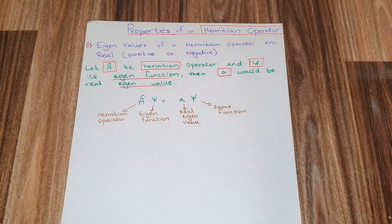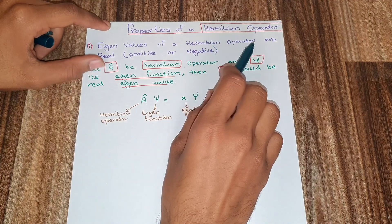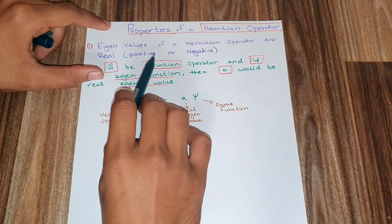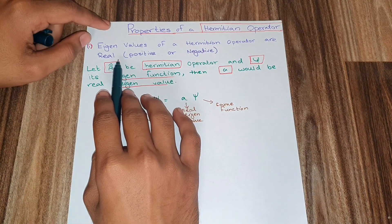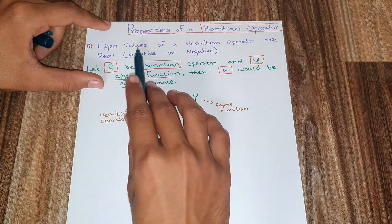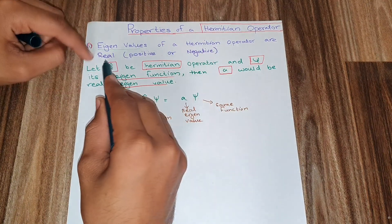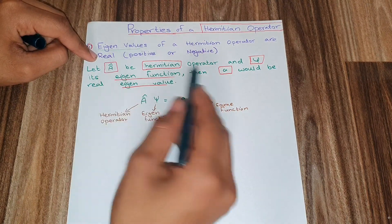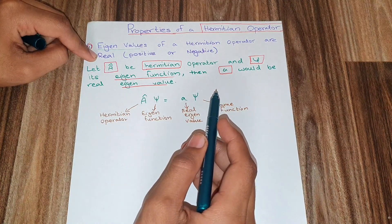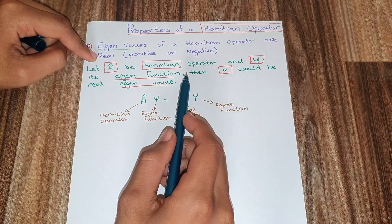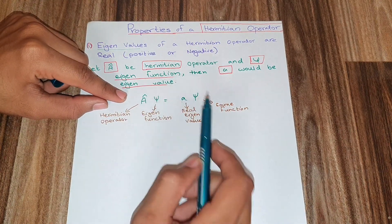Assalamu alaikum YouTube viewers. Today in this video I am going to describe some properties of Hermitian operators. The first property says that the eigenvalues of a Hermitian operator are real, meaning they do not contain the imaginary unit iota.